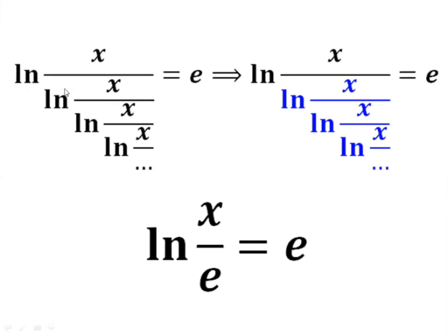As we mentioned before, the continued fraction goes till infinity. So this term is like the whole term. So we have ln of x all over this term, but this term is like that term, and it's equal to e. So we can write ln of x all over, this is e, equals to e.